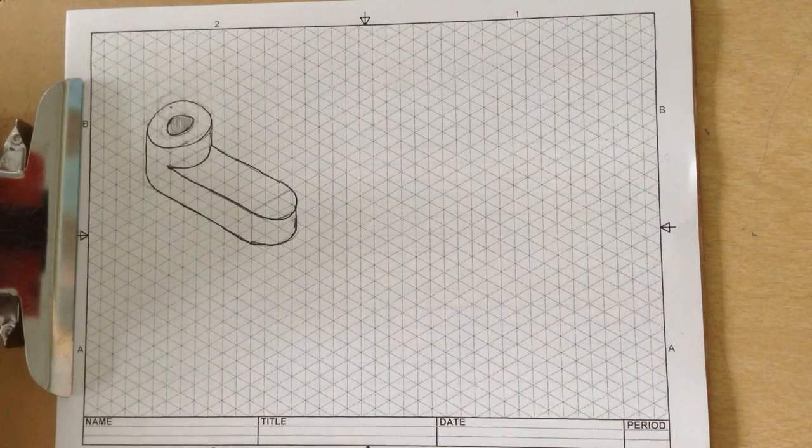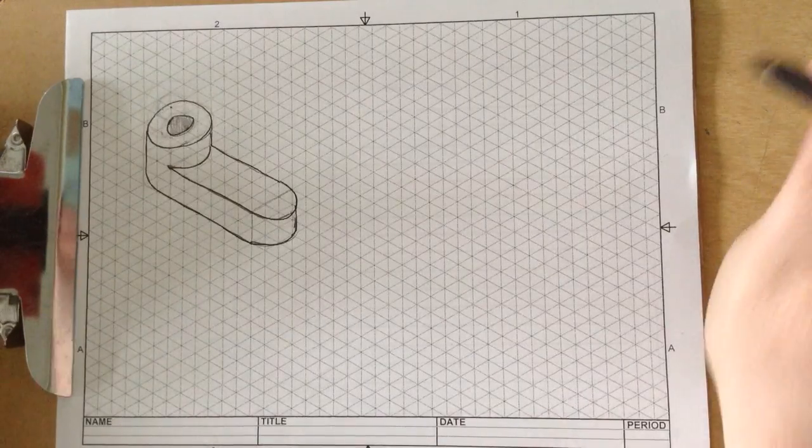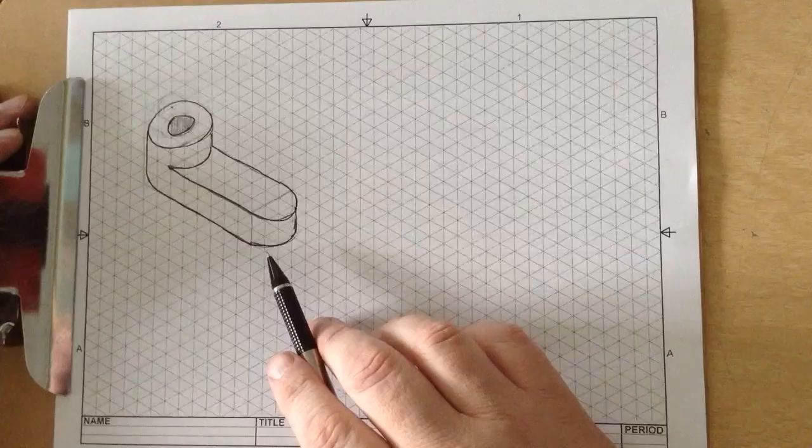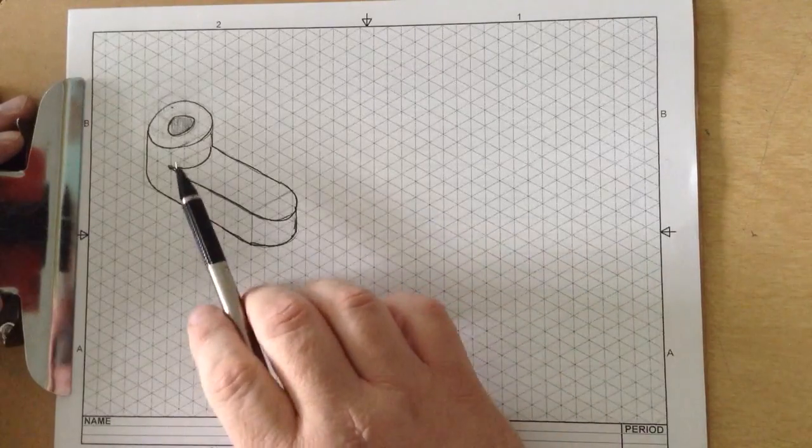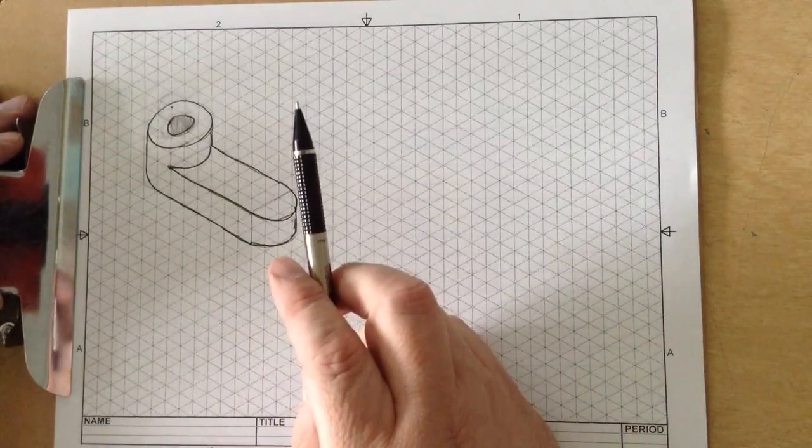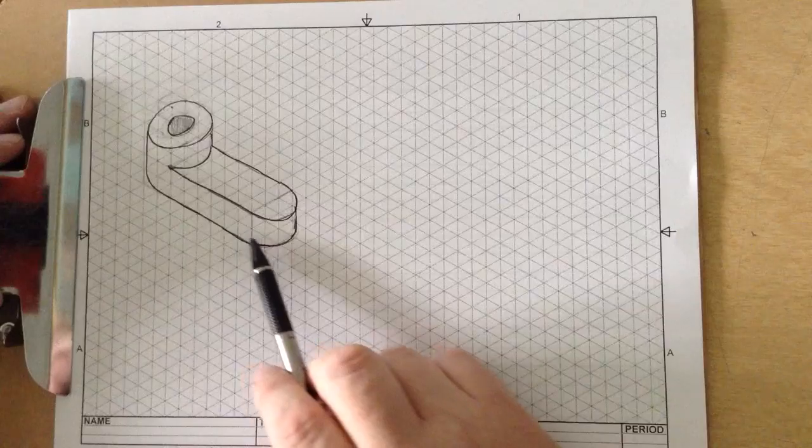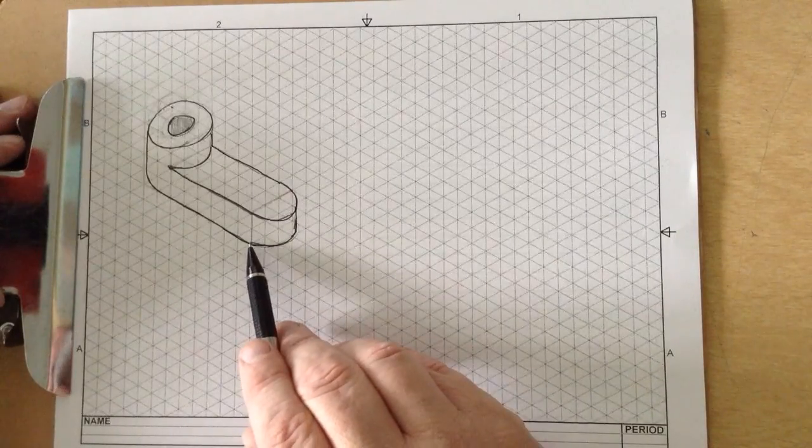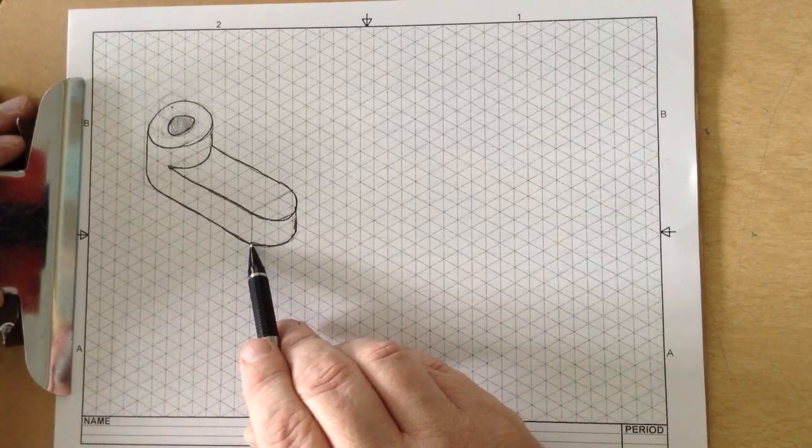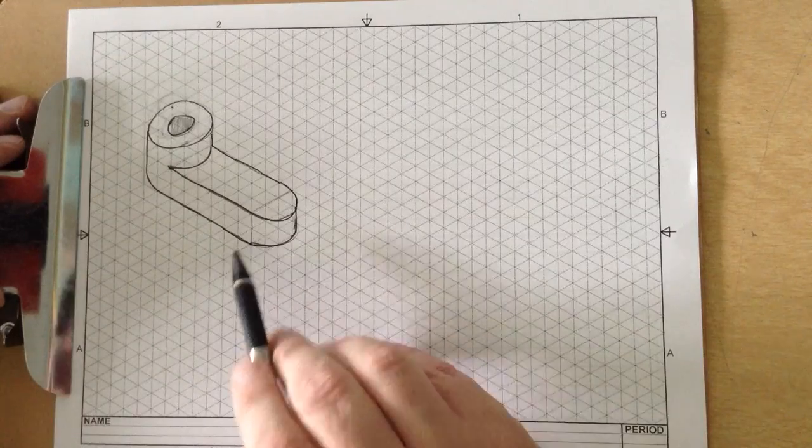We're going to take a few minutes and work on this shape with isometric drawing. Now this is kind of a tough shape because it involves circles and it's difficult to line up everything. So we are going to start with this point right here, which is going to be our point of origin.